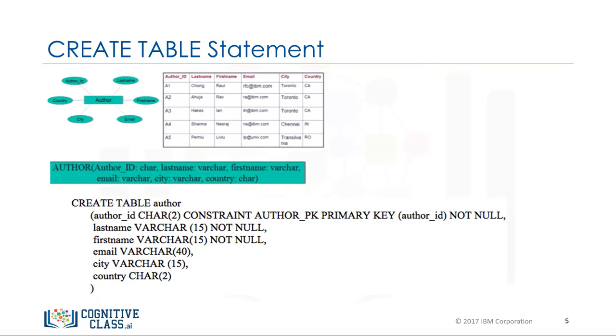Based on the author entity and its attributes, this slide shows the CREATE TABLE statement. Note that the author_ID is the primary key. This constraint prevents duplicate values in the table. Also note that last name and first name have the constraint NOT NULL. This ensures that these fields cannot contain a null value. An author must have a name.